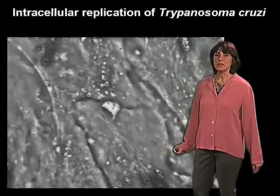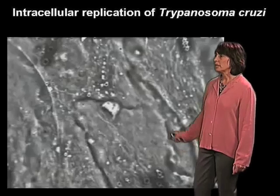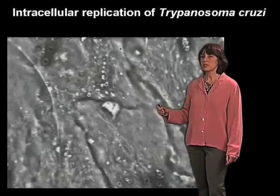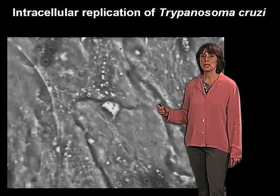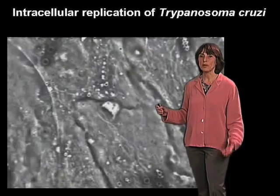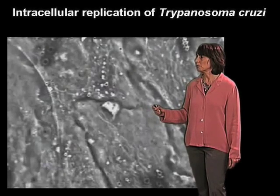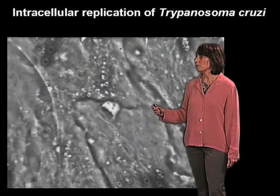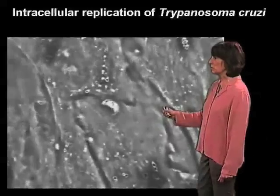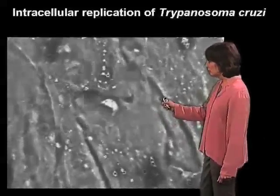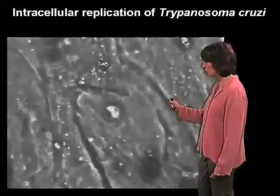What I'm going to show you in this movie, made by Erta Meyer in Italy in the 60s, are the last stages of the transformation of the intracellular parasite into the replicative amastigote form. We can see as we play the movie that this parasite, which just entered these chicken retinal cells, is going to reorganize itself into the rounded amastigote form.